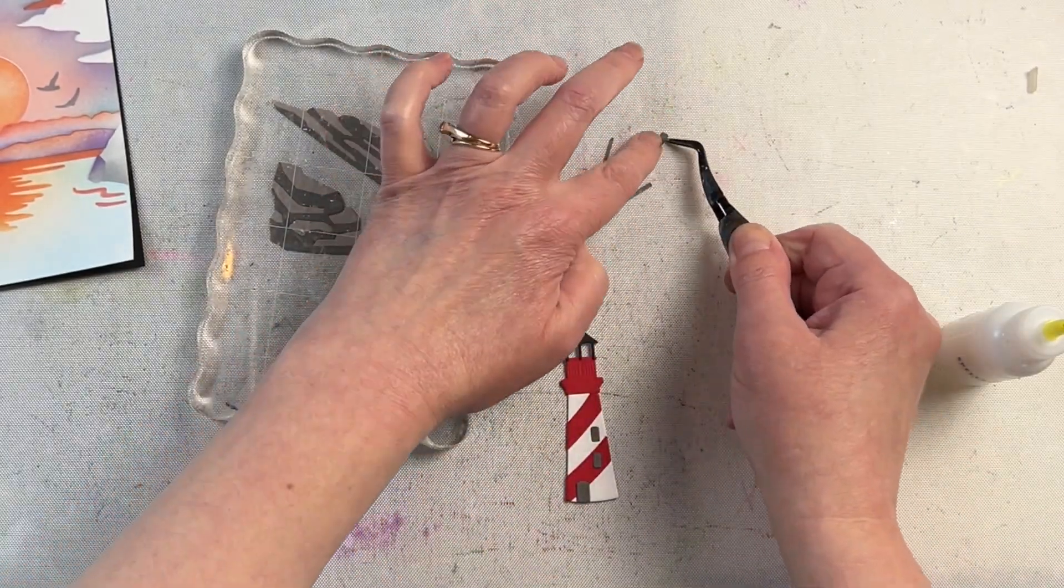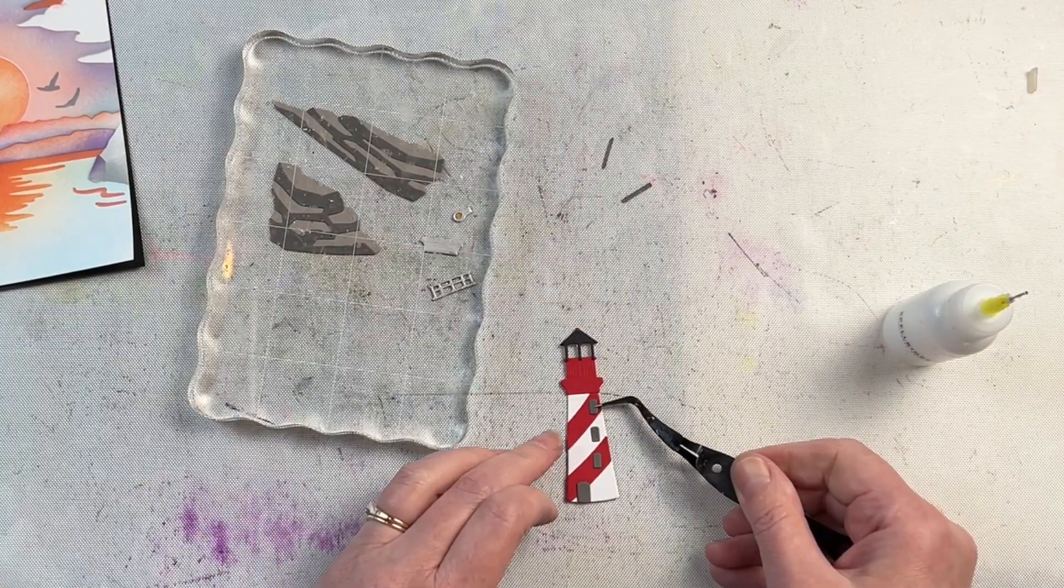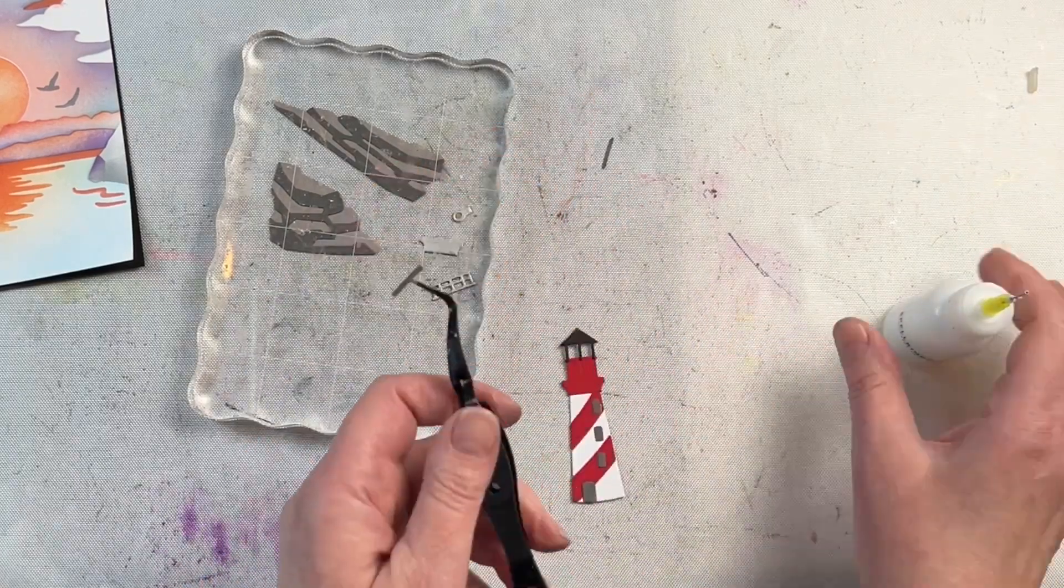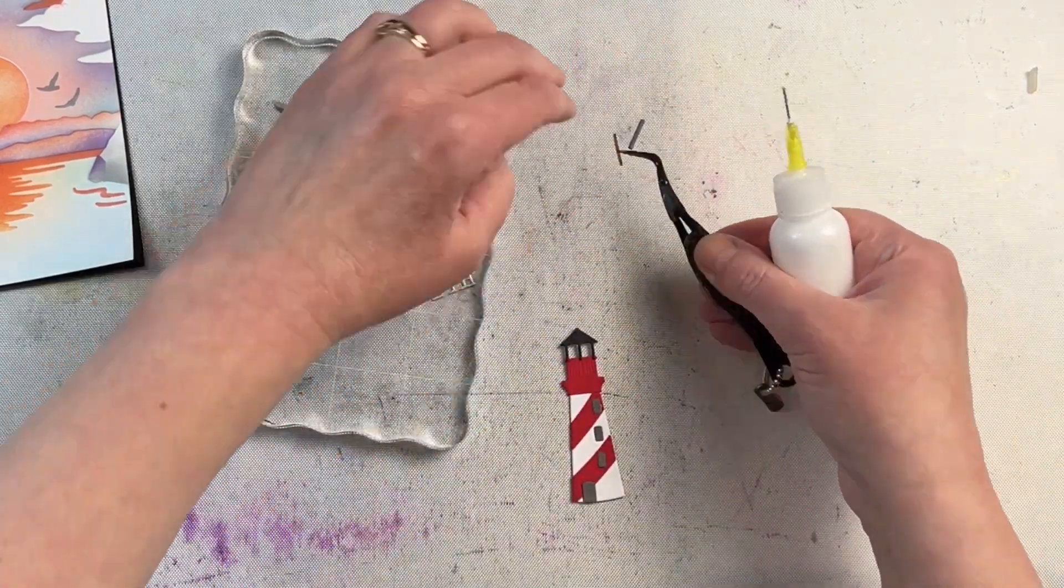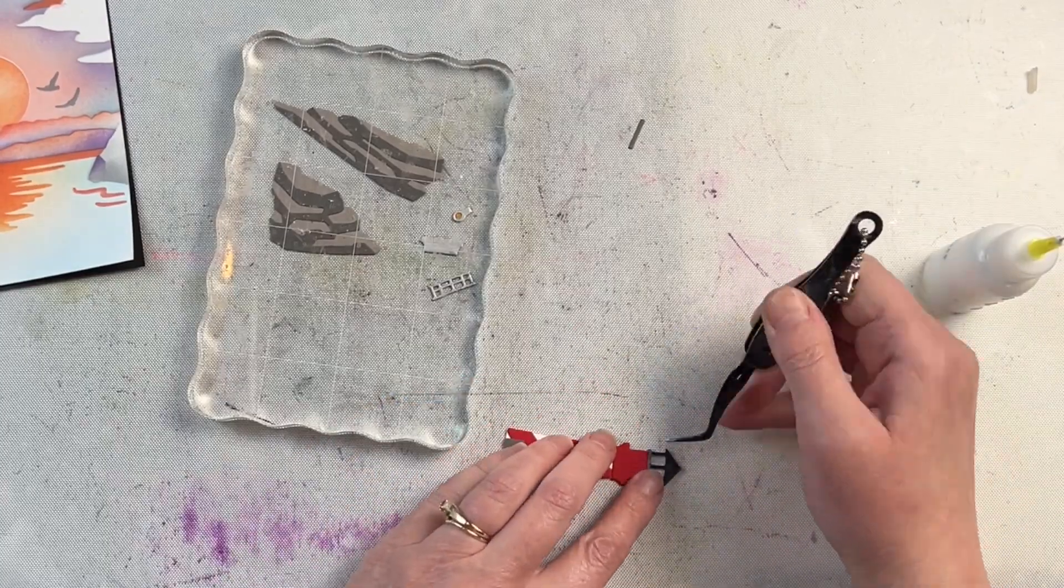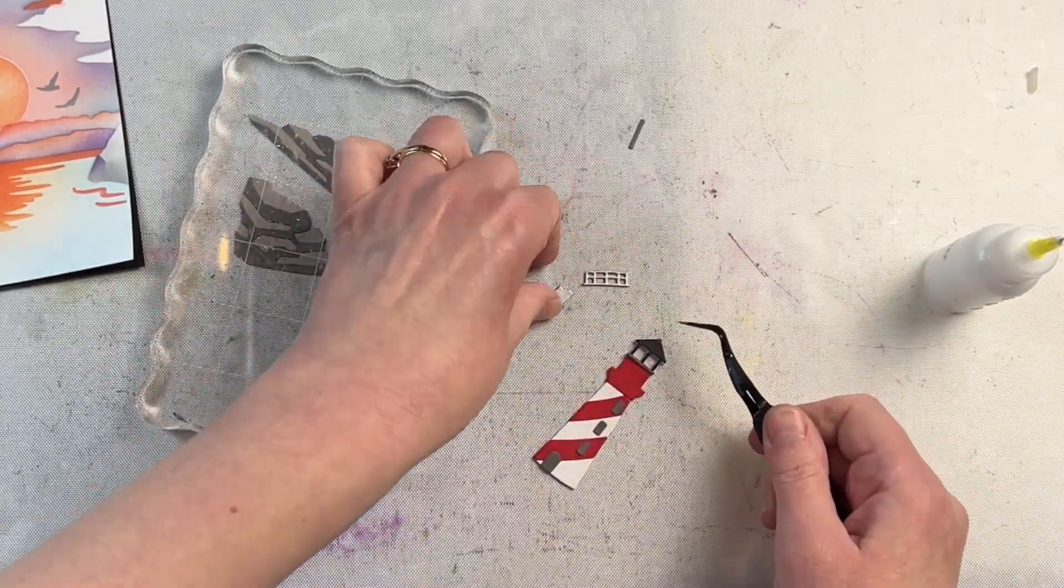When assembling this die, I like to use reversible tweezers to hold the die cuts in place and then I also like to use liquid glue because it gives you the opportunity to shimmy things and move things in the proper place as you're placing them down.